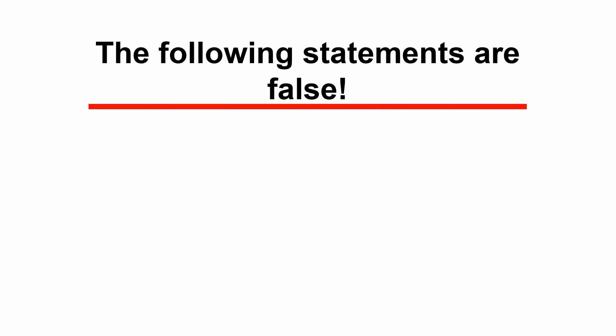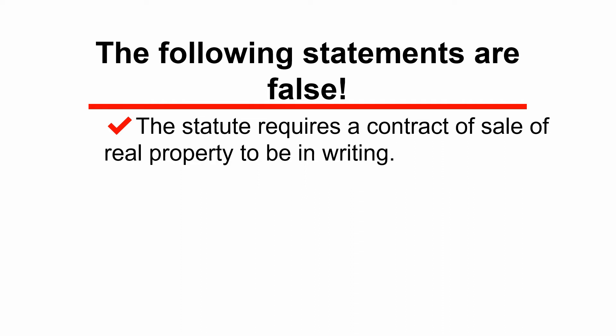There are all sorts of misconceptions floating around about the statute of frauds. The first one: many people believe the statute of frauds requires that a contract of sale of real property has to be in writing, but that's not correct. What the statute really says is that either the contract of sale itself or some memorandum thereof has to be in writing. So the writing doesn't have to be the contract of sale itself — it can be some other writing as long as it meets the demands of the statute of frauds.